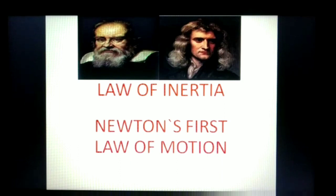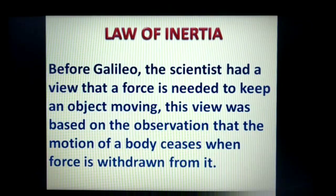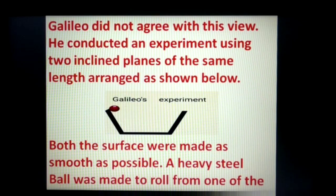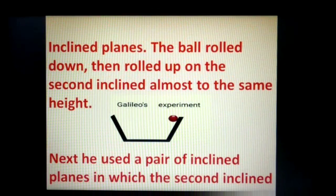We shall study the law of inertia — Newton's first law of motion. Before Galileo, scientists had a view that a force is needed to keep an object moving. This view was based on the observation that the motion of a body ceases when force is withdrawn from it. Galileo did not agree with this view. He conducted an experiment using two inclined planes of the same length, arranged as shown, with both surfaces made as smooth as possible. A heavy steel ball was made to roll from one of the inclined planes.